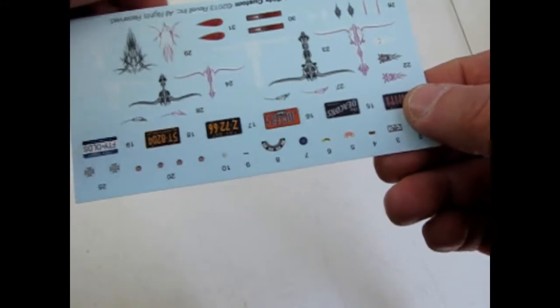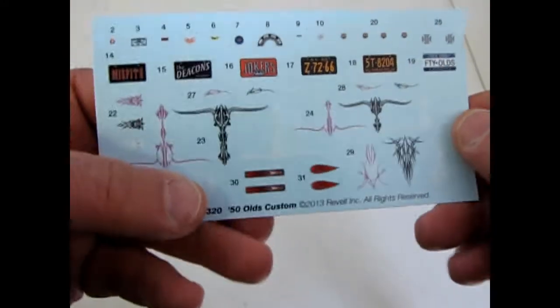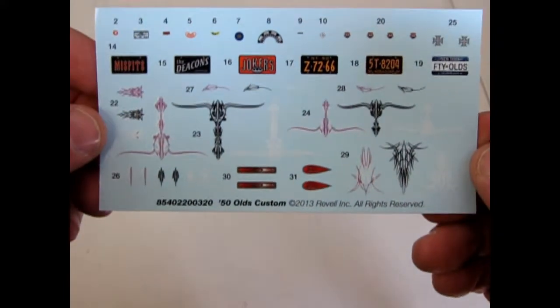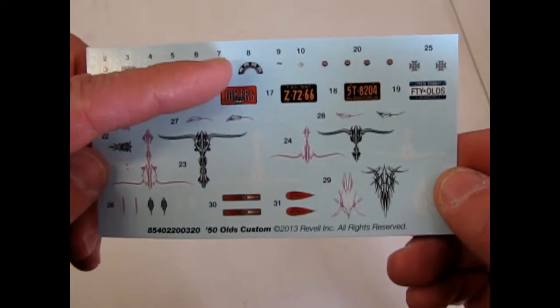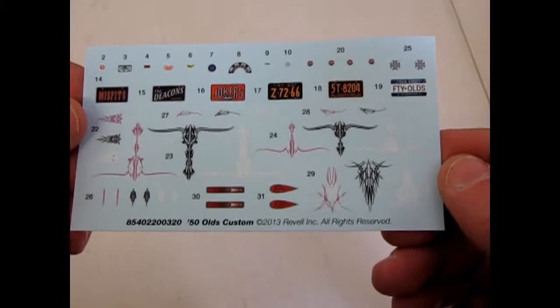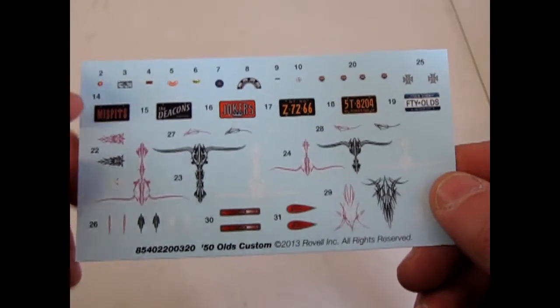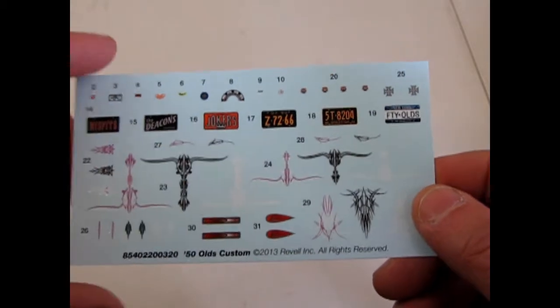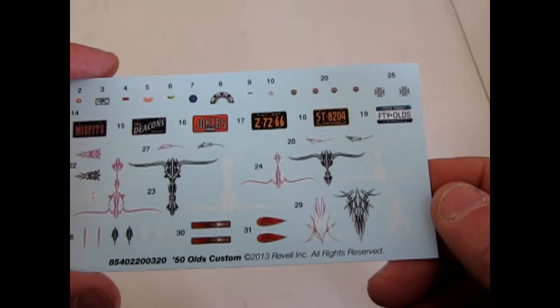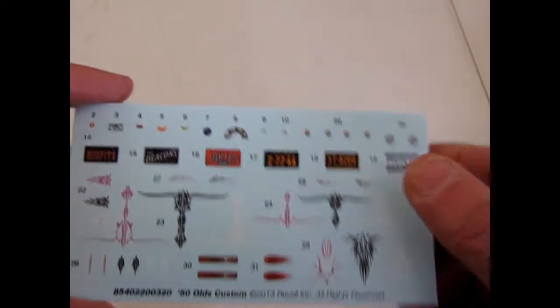And here is the decal sheet, which actually goes this way. Some pinstripes, there's a decal for the instrument panel. And of course, a lot of the car clubs, the Misfits, the Deacons, the Jokers. Yeah, so you can build some pretty cool things on here.